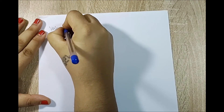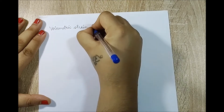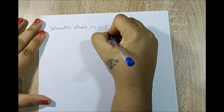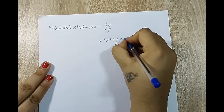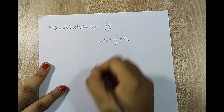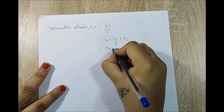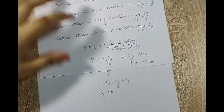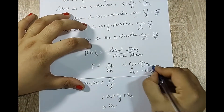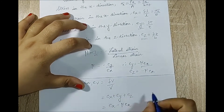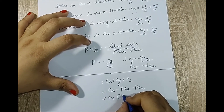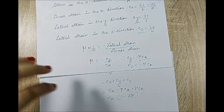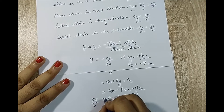Next let me write about volumetric strain. Volumetric strain Ev is δV/V. Now δV/V is also the strain along the x-axis plus the strain along the y-axis plus the strain along the z-axis. Writing Ex as Ex, Ey as minus μ·Ex, and Ez as minus μ·Ex — taking Ex common — what I get is Ex·(1 − 2μ). So this is my δV/V.